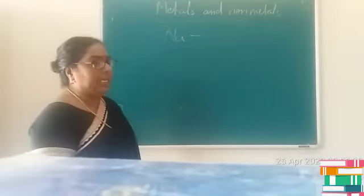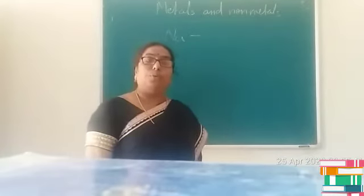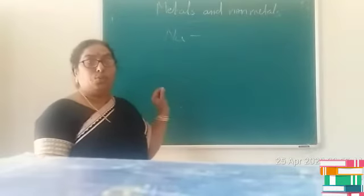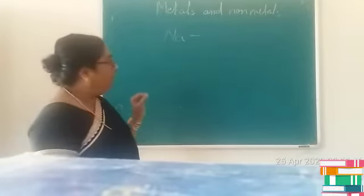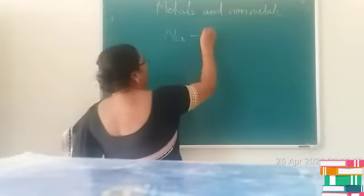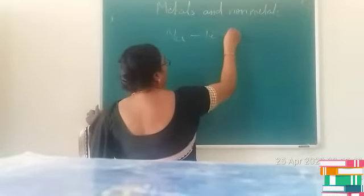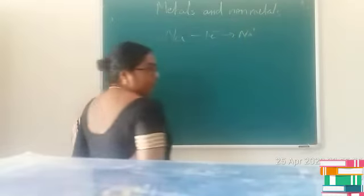Sodium possesses the electronic configuration of 2, 8, 1. To attain stability, sodium wants to lose one electron. When it loses one electron, it forms sodium ion Na+.